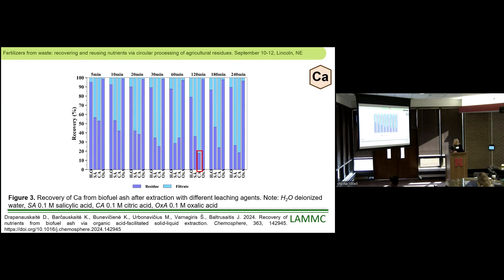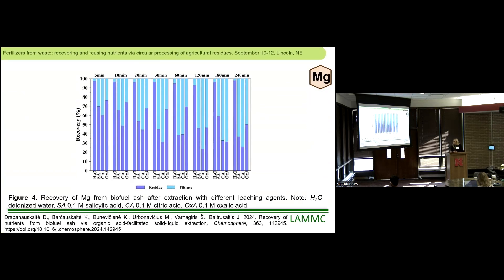When we tried to extract with oxalic acid, we found out that calcium of course precipitates as insoluble calcium oxalates. For magnesium, it shows the same pattern as calcium, which tells us that magnesium in biofuel ashes is incorporated in the same compounds as calcium. The best recovery was obtained using citric acid after two hours of extraction, reaching close to 75%.